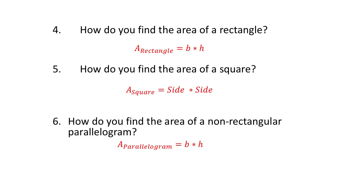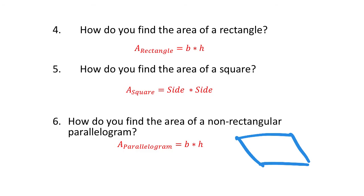So how do you find the area of a rectangle? Base times height — we said length times width, it's exactly the same thing. How do you find the area of a square? Multiply it by the other side because they're the same — that's why it's showing side and side. I wouldn't abbreviate that unless you're going to use exponents. And then for parallelograms: base and height, where we're looking for that 90-degree angle.